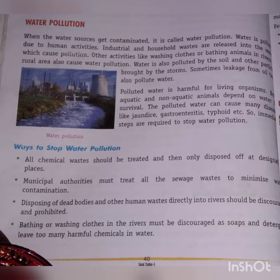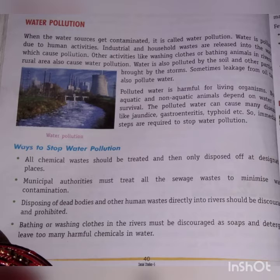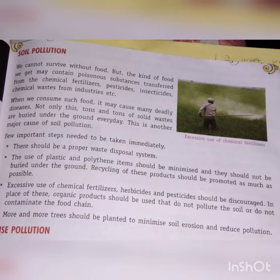Polluted water se kai tarah ki bimariyan jaise joint issues, gastroenteritis, typhoid etc. ho jaati hain. Immediately steps are required to stop water pollution. All chemical waste should be treated and then only disposed of at designated places. Municipal authorities ko water pollution ko kam karne ke liye sewage waste ka ilaaj karna chahiye. Dead bodies and other human waste ko directly nadiyon mein dispose karne se discourage karna chahiye. Nadiyon mein nahaane ya kapde dhone se bhi discourage karna chahiye kyunki soap aur detergent water mein kai tarah ke harmful chemicals chodте hain.